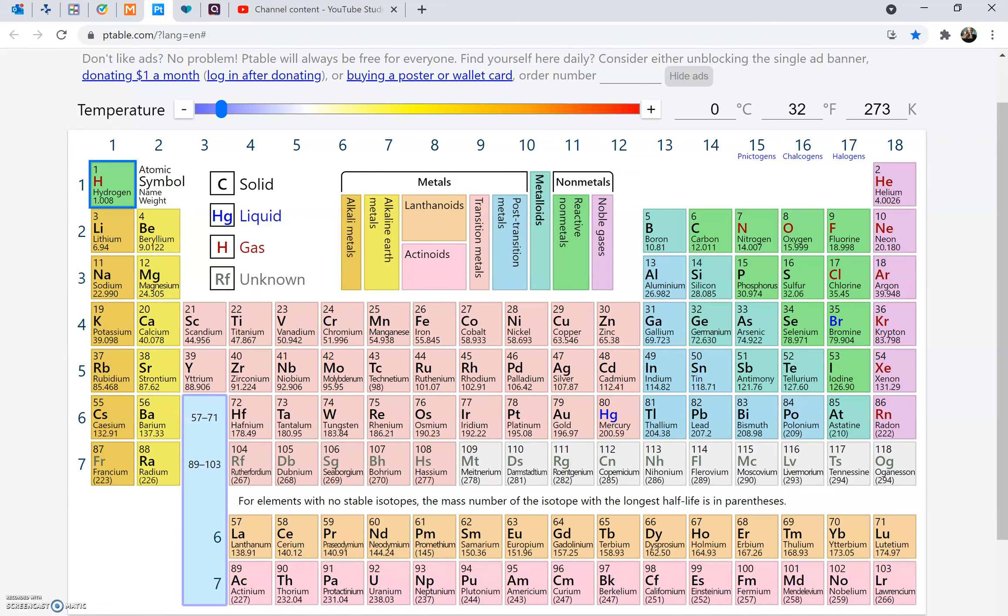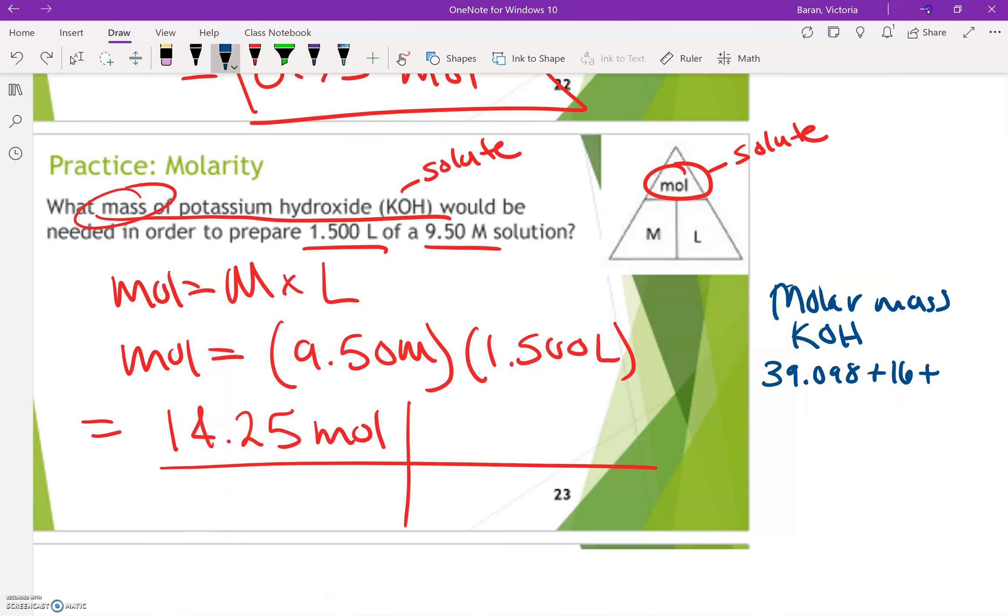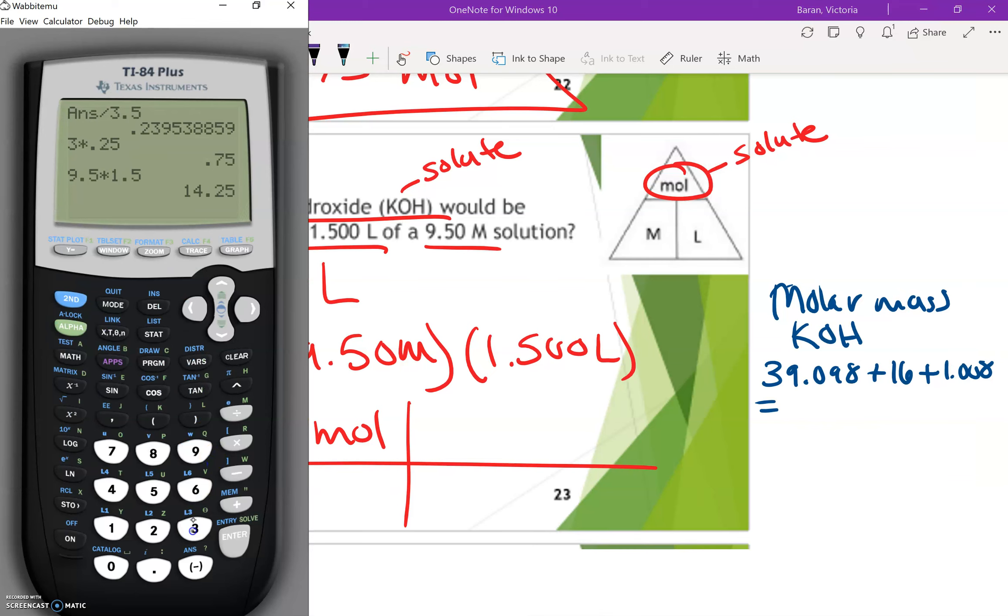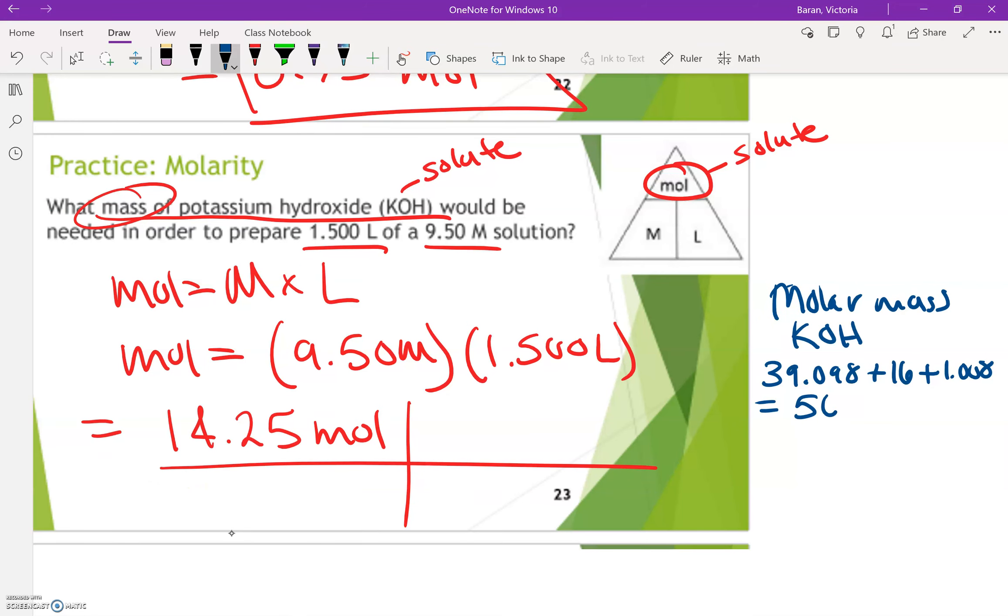Hydrogen is 1.008. So we're just going to add those together. So 39.098 plus 16 plus 1.008. 56.106 grams per mole. Or again, this is the same thing as saying 56.106 grams equals one mole. So that's basically an equality.